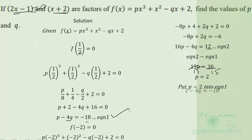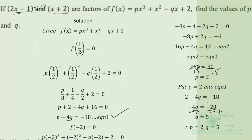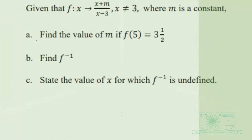Substituting p equals 2 into equation 1 gives 2 minus 4q equals negative 18. Grouping like terms and dividing through by negative 4 gives q equals 5. So p equals 2 and q equals 5.